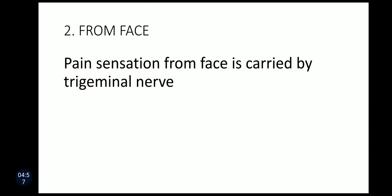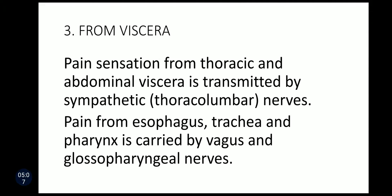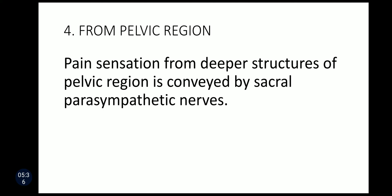Pain sensation from the face is carried by the trigeminal nerve. Pain sensation from thoracic and abdominal viscera is transmitted by sympathetic nerves, that is thoracolumbar nerves. Pain from the esophagus, trachea, and pharynx is carried by the vagus nerve and glossopharyngeal nerve. The pain sensation from deeper structures of the pelvic region is carried by sacral parasympathetic nerves.